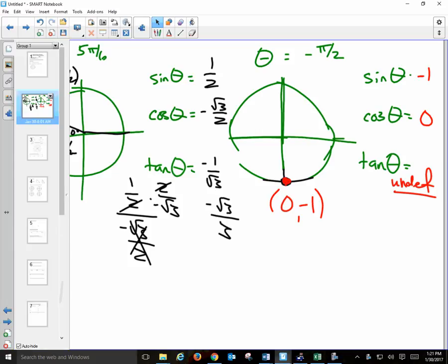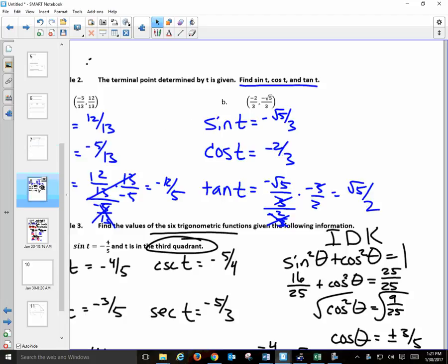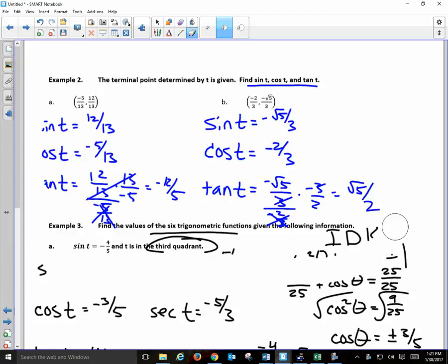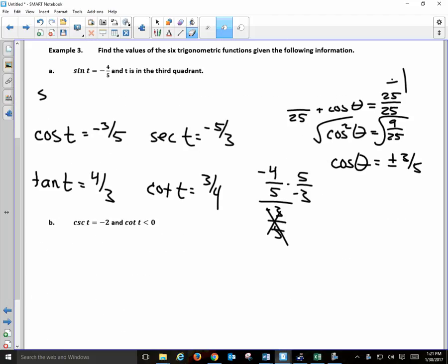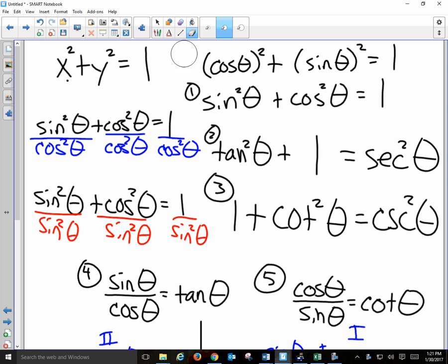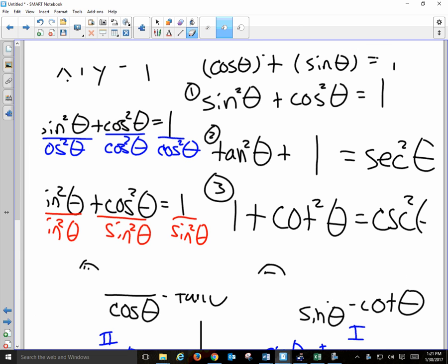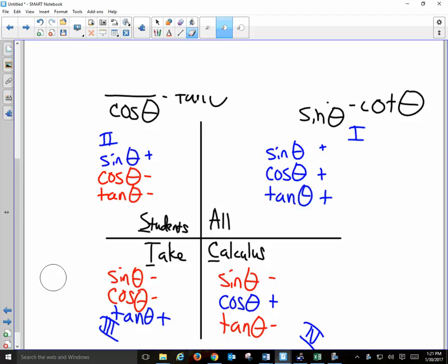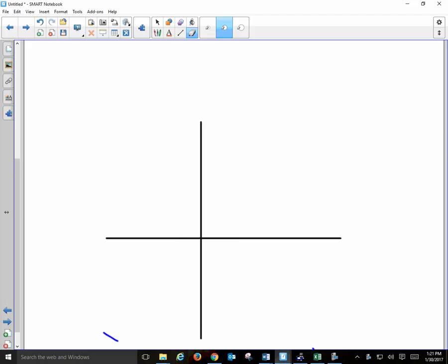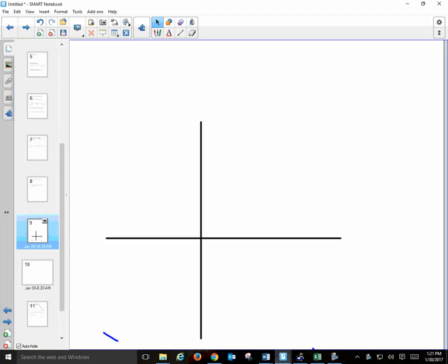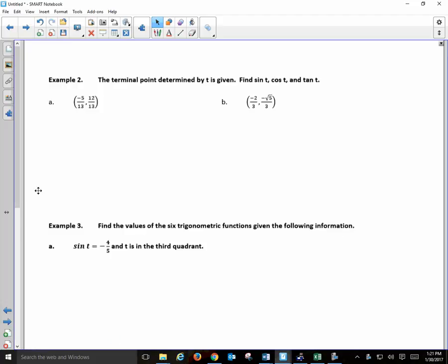So, let's take out our notes and open up to this section. A little bit of review from Friday. Given the terminal point, find sine, cosine, and tangent. Sine of T, cosine of T, and tangent of T.